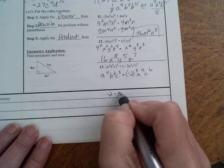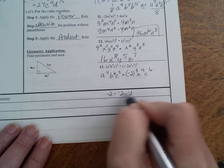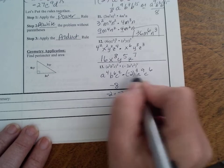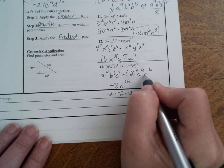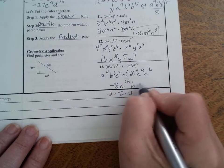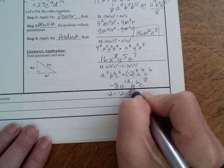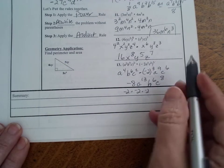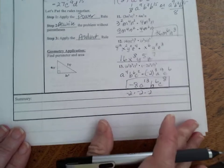Now, negative 2 times negative 2 times negative 2 is a negative 8, not negative 6, so be careful. Negative 8, a to the 13th. Now, there's no b here, so it's going to be b to the sixth, c to the eighth. So now, let's use this, so hopefully you get a little bit more comfortable with those.